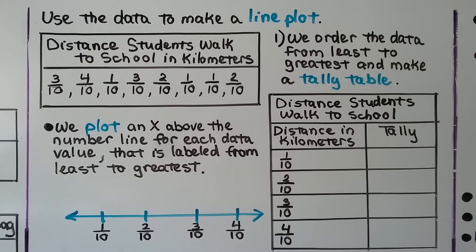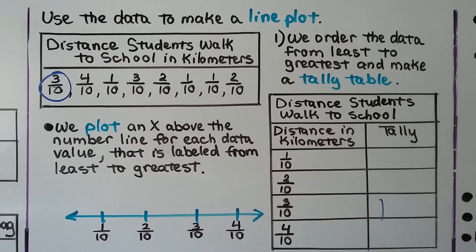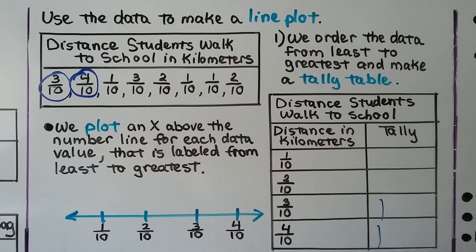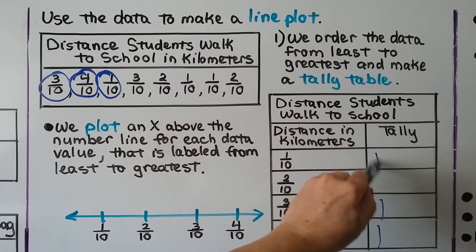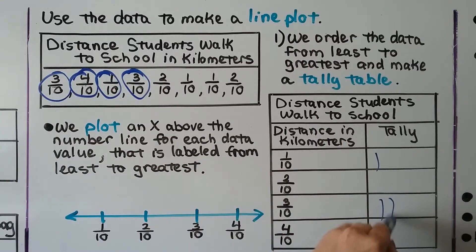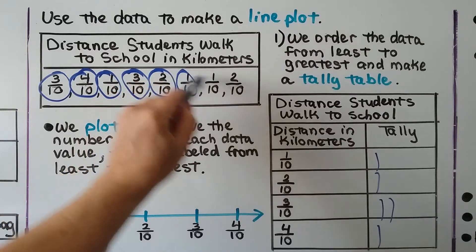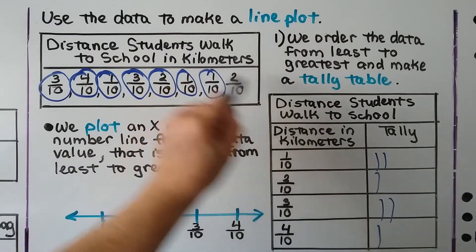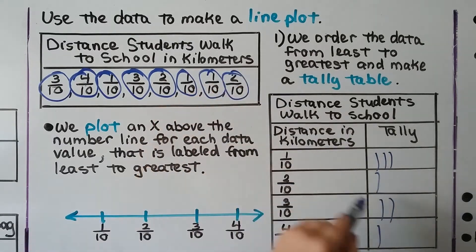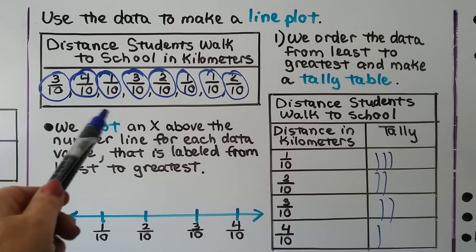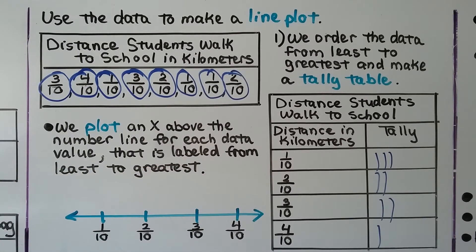Now we can mark the information into the tally table. We have a three-tenths — put a tally mark. A four-tenths — put a tally mark. A one-tenth — put a tally mark. Another three-tenths — put a tally mark. A two-tenths — put a tally mark. Another one-tenth — put a tally mark. Another one-tenth — put a tally mark. And a two-tenths — put a tally mark. I like to circle them so that I know I already tally marked that one.